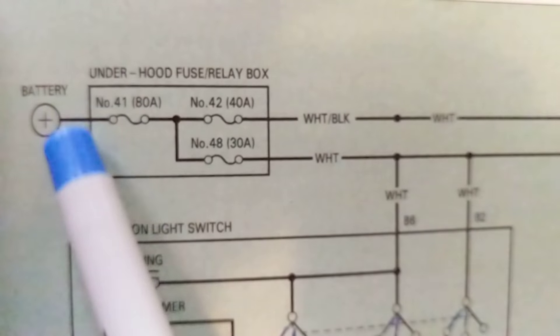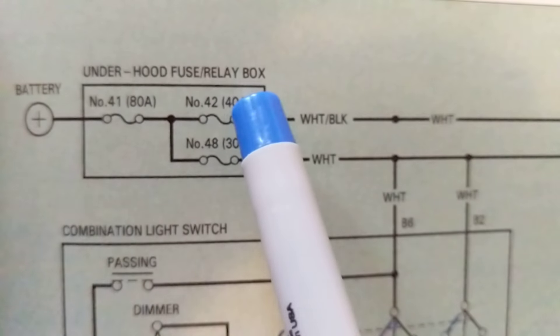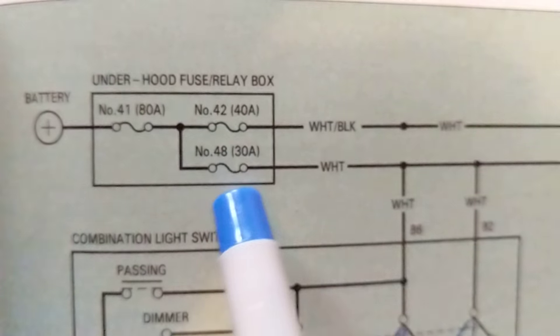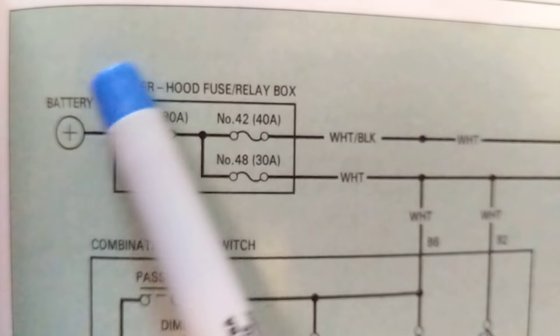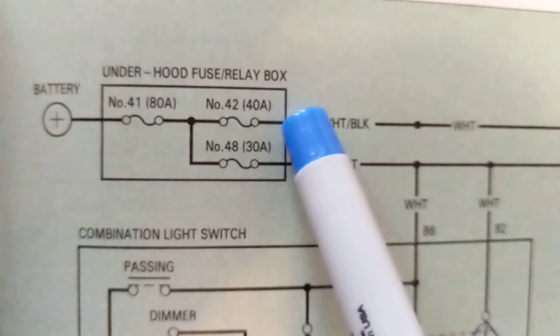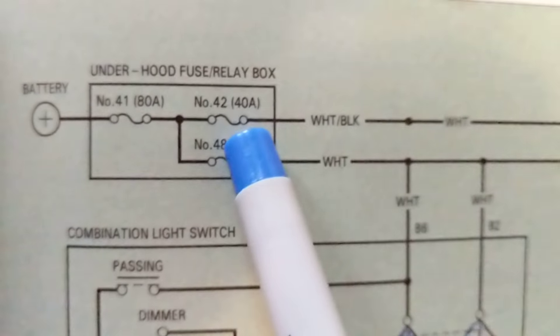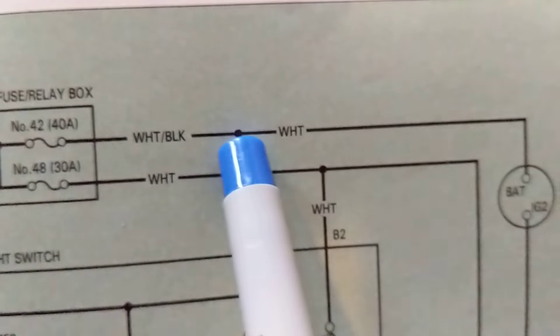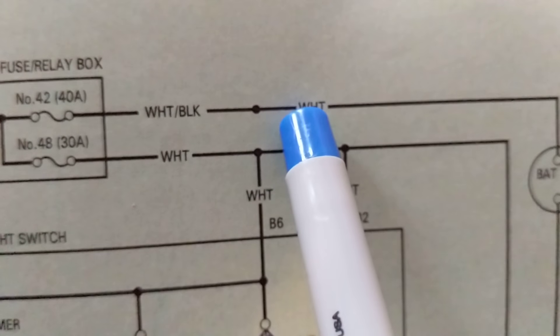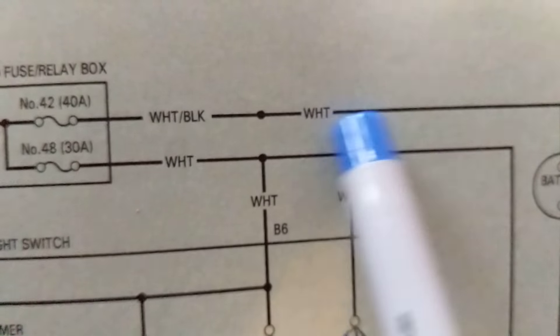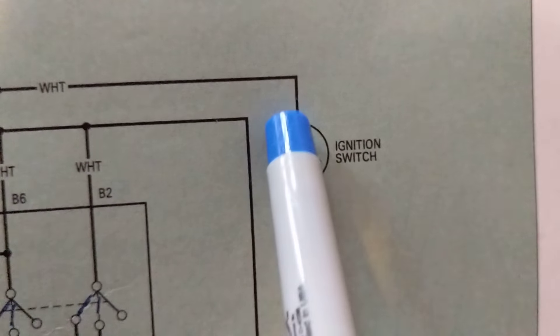Now there's relays in the fuse box and it's under the hood like I said before in my other videos. There's also another one under the dashboard. Well this is giving you the location exactly where it is. Other side of this fuse number 42 or the 40 amp fuse which is a white black wire.